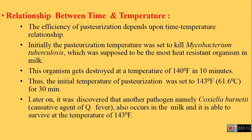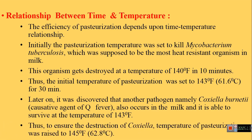But later on, it was observed that another pathogen, Coxiella burnetii — the causative agent of Q fever — also occurs in milk and is able to survive at 143°F. Therefore, to ensure the destruction of Coxiella burnetii, the temperature of pasteurization was raised to 145°F (62.8°C). So the initial temperature was meant to kill Mycobacterium tuberculosis, but later it was raised to also kill Coxiella burnetii.